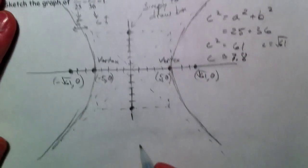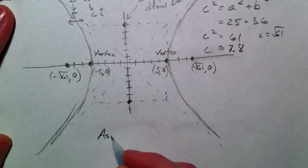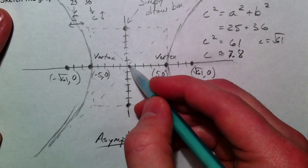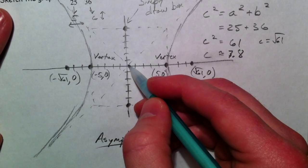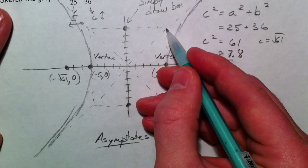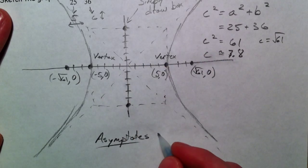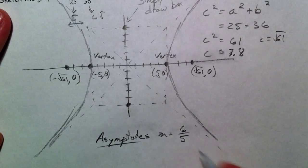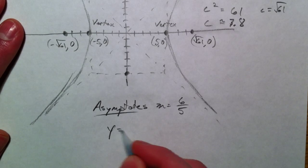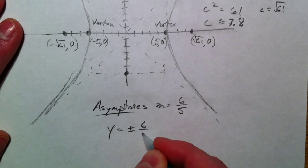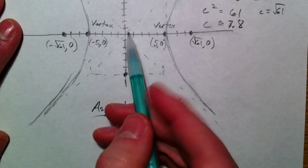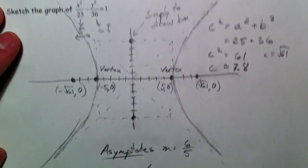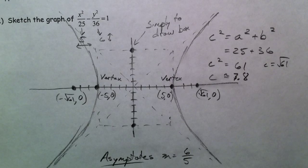And our asymptotes are going to have a slope that's very much related to the box. Remember how slope is rise over run, so we went up 6 and over 5. Up 6 over 5, so our slope is the y over the x, 6 over 5. So we could write our equation y equals, I'm going to say plus or minus 6 fifths x, because it goes up 6 and over 5 or down 6 and over 5, depending on which one you use. And that is essentially what a hyperbola is.